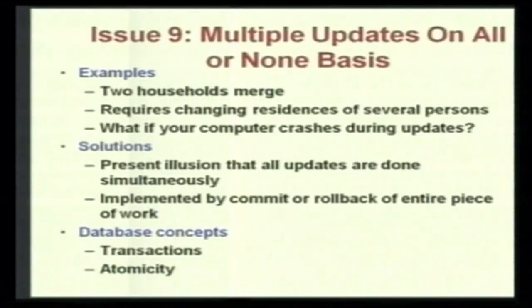While actually updates are not occurring simultaneously, what we do is introduce the concept of commit or rollback of the entire piece of work. If in the middle of an update the system crashes, you have to roll back to before the update actually happened — that is the whole transaction. If the complete update is over, you commit. You do not commit unless the complete thing is over; that is why we call it an all-or-none basis.